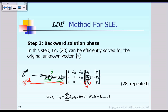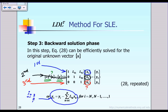After solving for X2, we look at the first equation and solve for X1. In general, we get a general formula to solve for X sub i, where i could be 3, 2, or 1. Using equation 28, we can solve for the original vector X, taking care of the original unknown.